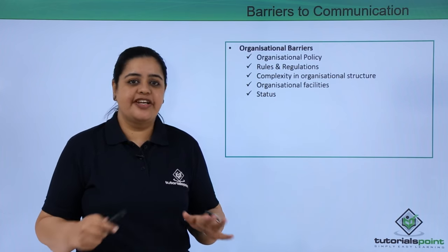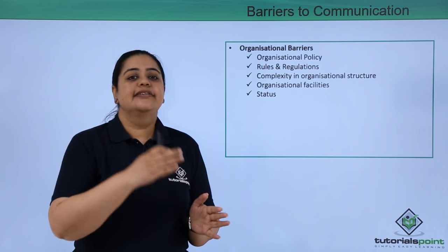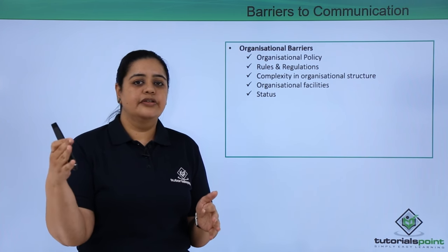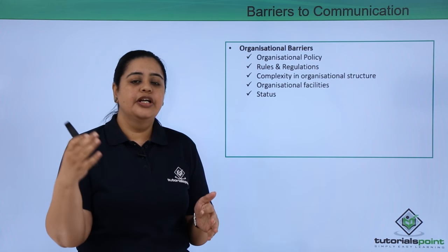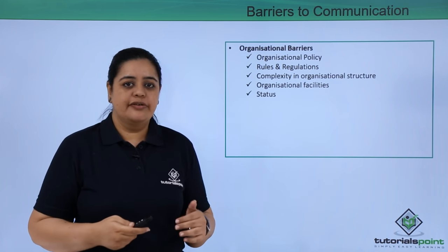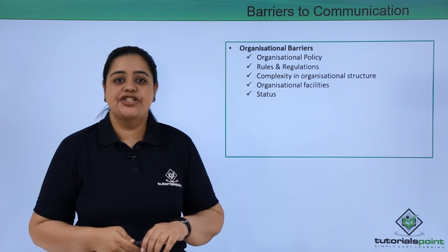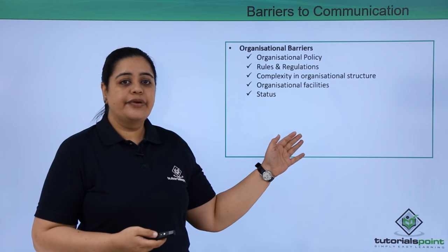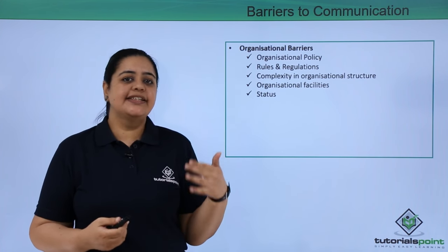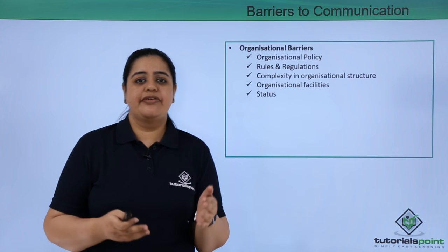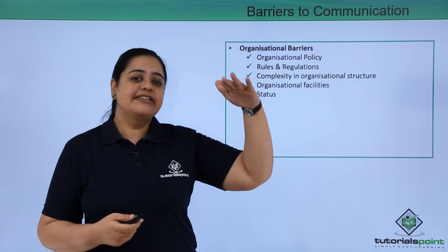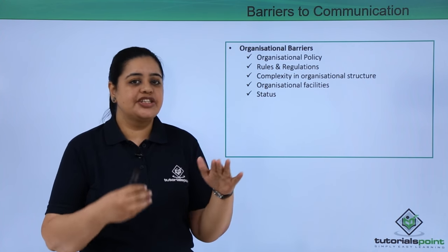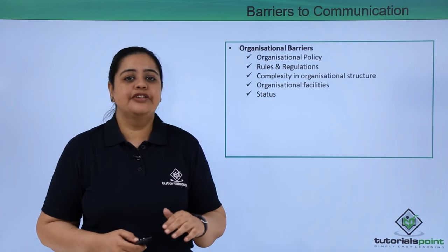If the structure of the organization is very complex, the flow of communication also gets obstructed because people get confused about whom to contact for which problem. Organizational facilities also create barriers to communication. Then comes status: sometimes superiors or managers feel they have a certain status and look down on subordinates, which creates a barrier to communication.